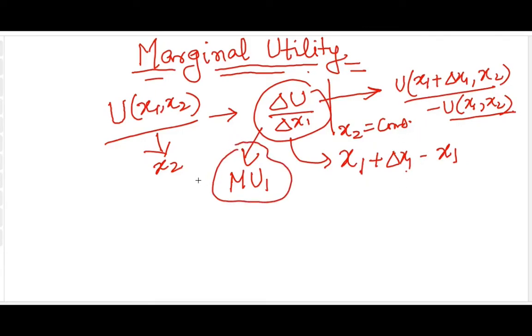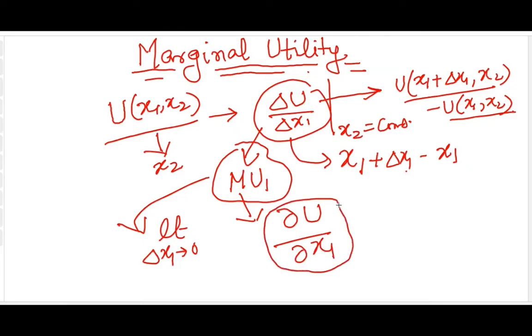Now as this is the average rate, we can in the limiting sense when delta x1 tends to zero say that the instantaneous marginal utility is just del U upon del x1, which means I am differentiating U with respect to x1 keeping x2 constant. Similarly, I can do del U upon del x2 to calculate the marginal utility for good two. So this will be your MU2 and this will be your MU1.